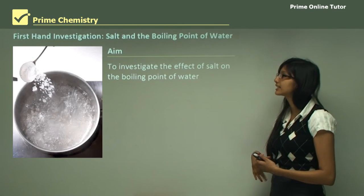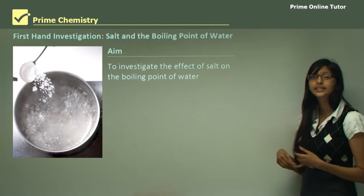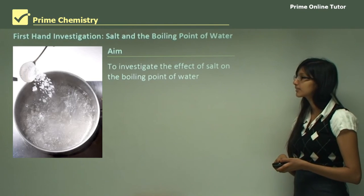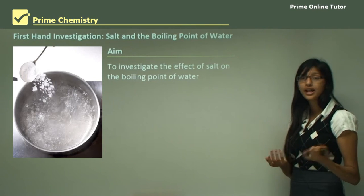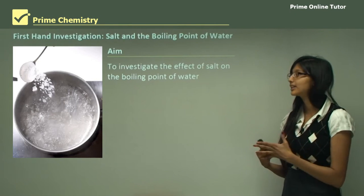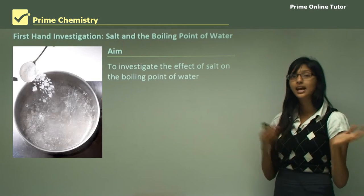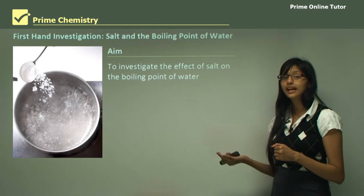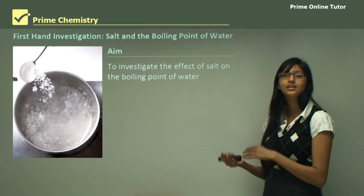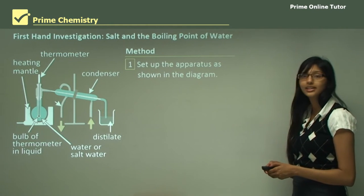Now let's look at the first-hand investigation. In this one we will look at how salt affects the boiling point of water. The aim will be to investigate the effect of salt on the boiling point of water. Your hypothesis can be that salt affects the boiling point of water, or that salt does not affect the boiling point. In your conclusion you always refer back to your hypothesis.